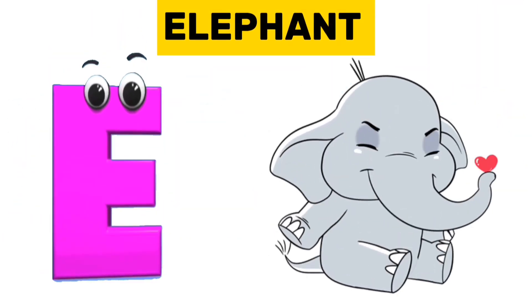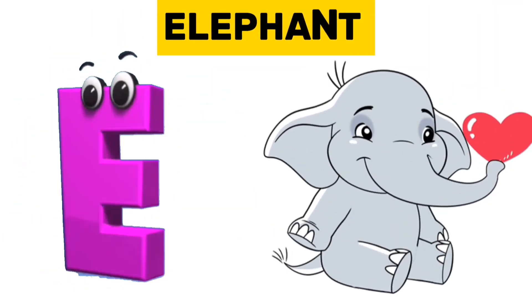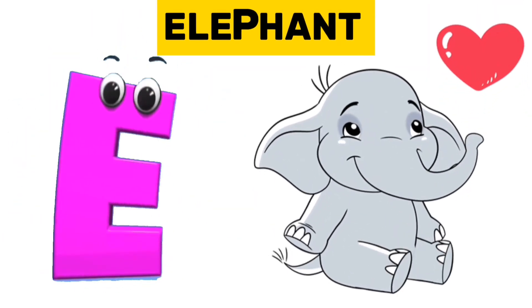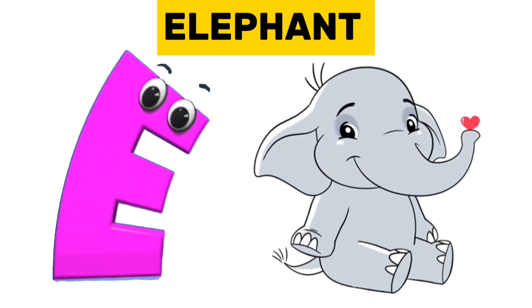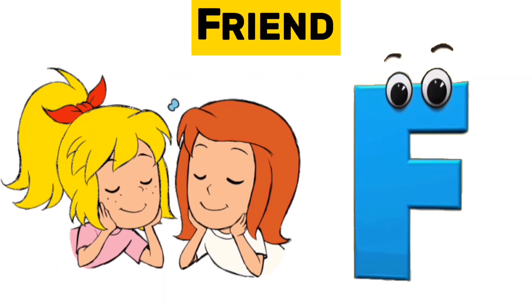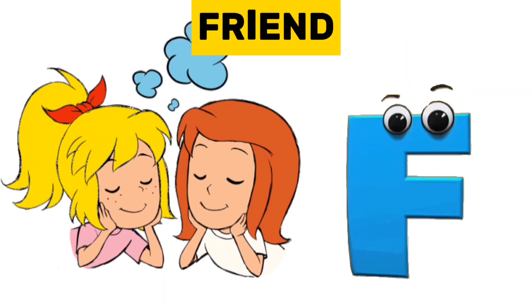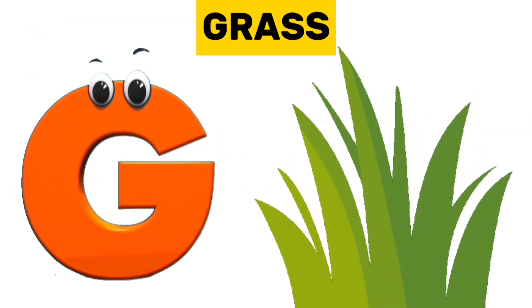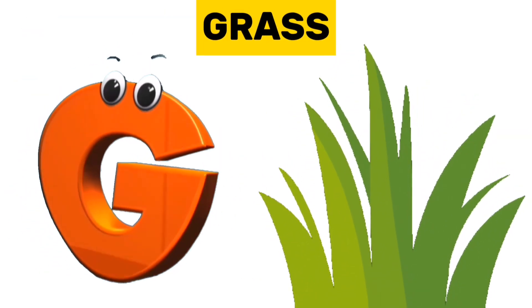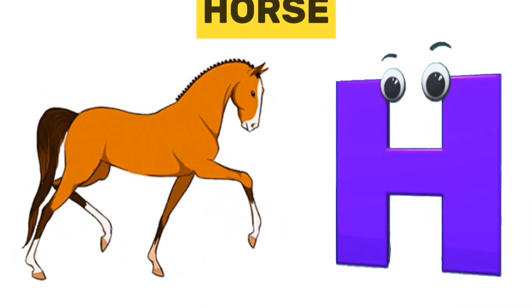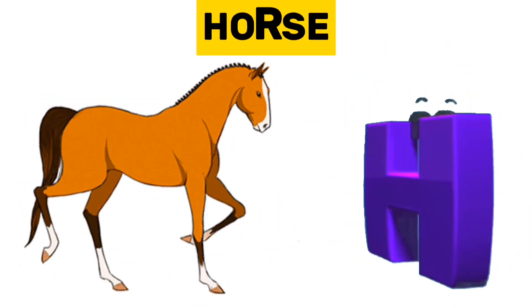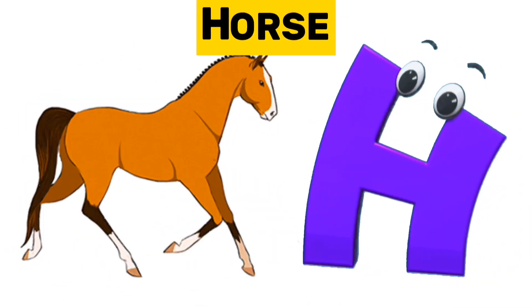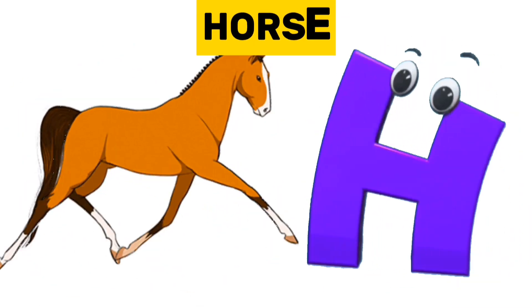E is for elephant. E, e, elephant. F is for friend. F, f, friend. G is for grass. G, g, grass. H is for horse. H, h, horse.